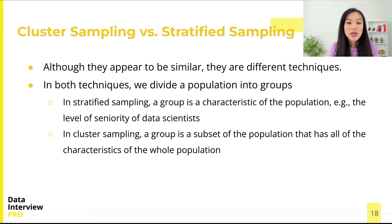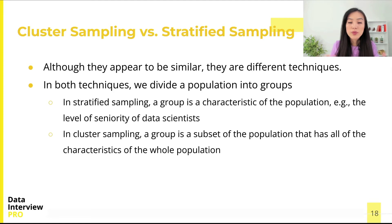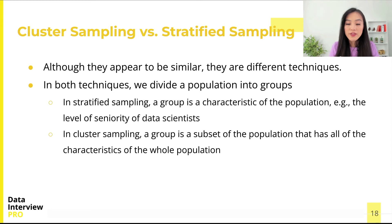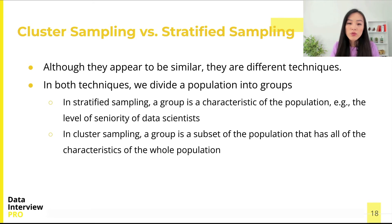Finally, let's look at the differences between stratified sampling and cluster sampling. Although they appear to be similar, they are different techniques. In both techniques, we start by dividing the population into groups, but what we mean by group is most likely different in the two. In stratified sampling, a group is a characteristic of the population, such as the level of seniority of data scientists. In cluster sampling, a group is a subset of the population that has all of the characteristics of the whole population — in other words, a group is a miniature or smaller version of the population.